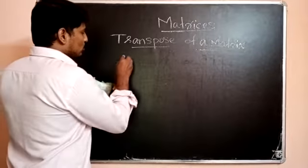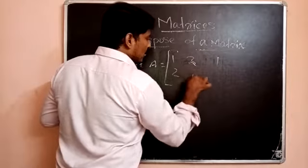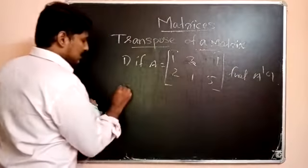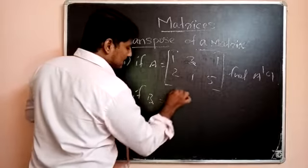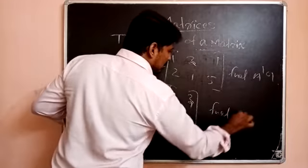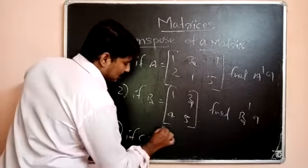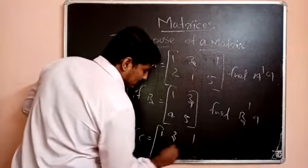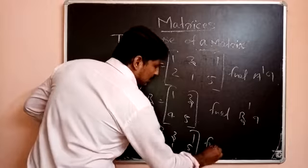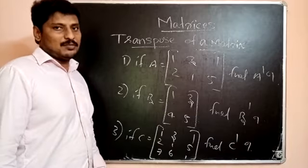Now your assignment: First, if A is equal to the matrix 1, 3, 1; 2, 1, 5 — find A transpose. Second, if B is equal to the matrix 1, 3, 4, 5 — find B transpose. Third, if C is equal to the matrix 1, 3, 1; 2, 1, 5; 7, 6, 1 — find C transpose. Send your answers to my WhatsApp number. Thank you.